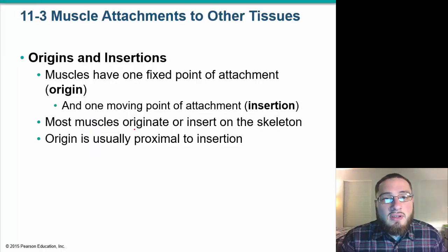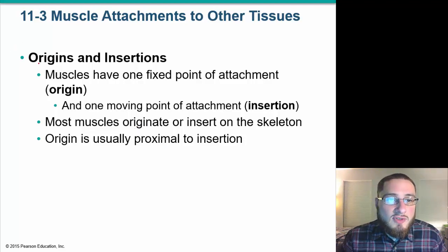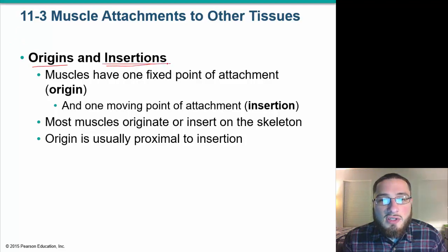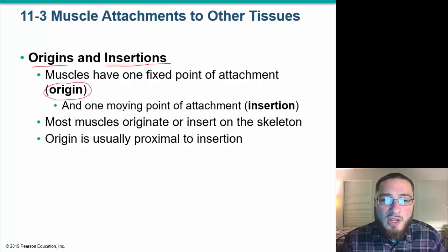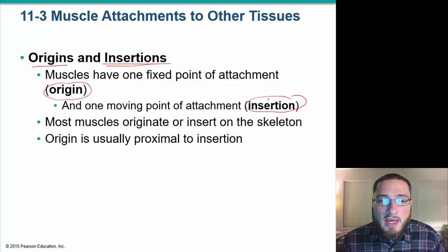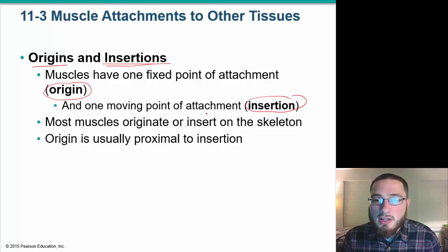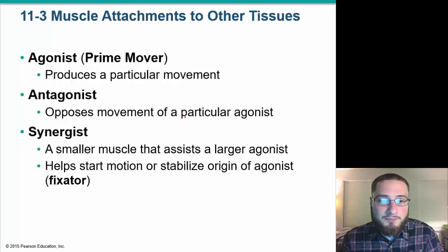When we talk about the muscles, we always talk about origin — where the muscle is starting, where it is coming from — and where it inserts. Muscles have one fixed point of attachment, which is our origin, and one moving point, which is our insertion. So every muscle has an origin and they all have an insertion.